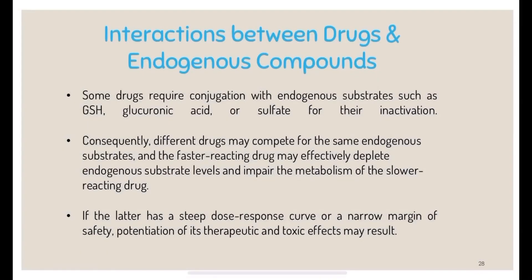Regarding interactions between drugs and endogenous compounds: some drugs require conjugation with endogenous substrates such as GSH, glucuronic acid, or sulfate for their inactivation. Consequently, different drugs may compete for the same endogenous substrates, and the faster-reacting drug may effectively deplete endogenous substrate levels and impair the metabolism of the slower-reacting drug. If the latter has a steep dose-response curve or a narrow margin of safety, potentiation of its therapeutic and toxic effects may result.